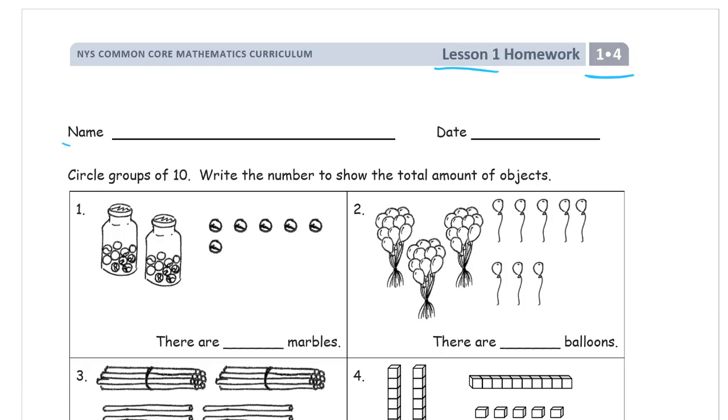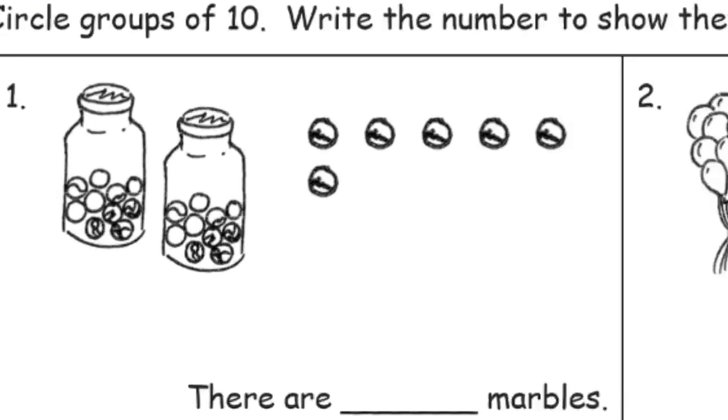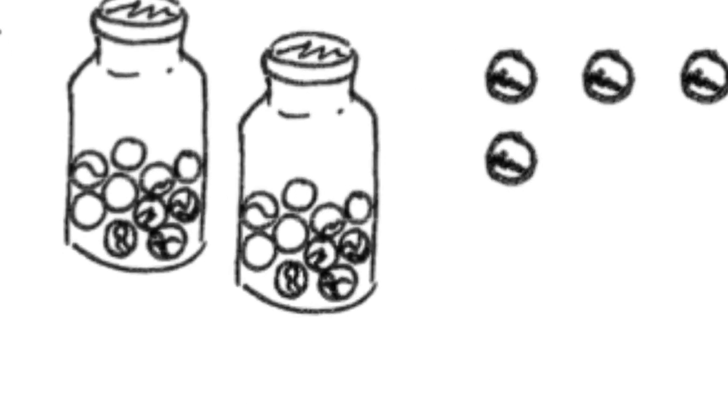Get your name on here first, don't forget it. And here we're working with circling groups of ten, writing the number to show the total number of objects. Now you can look at these and I'm not gonna do this for every single one of these different pictures, but just for an example here's the marbles in the jar.